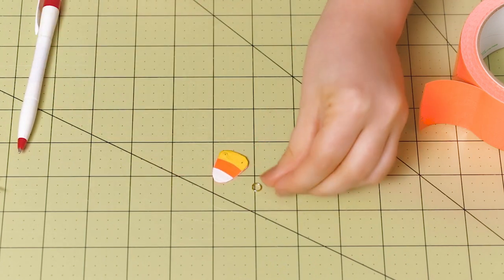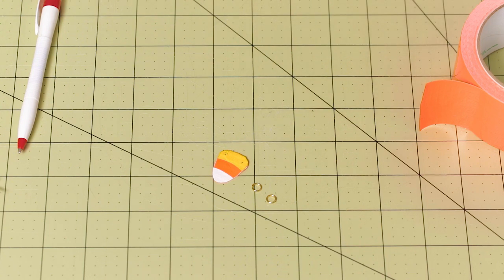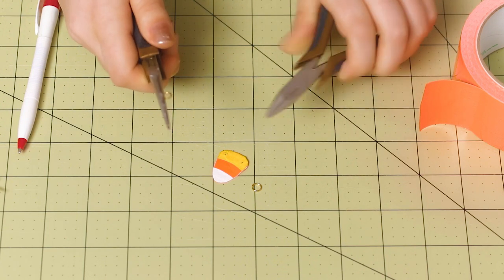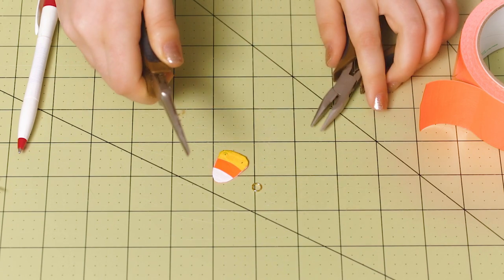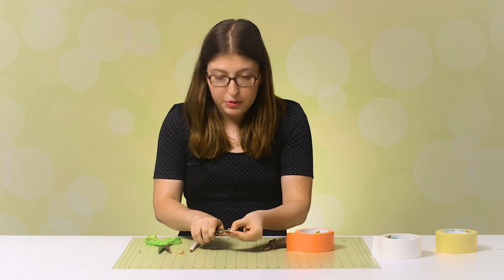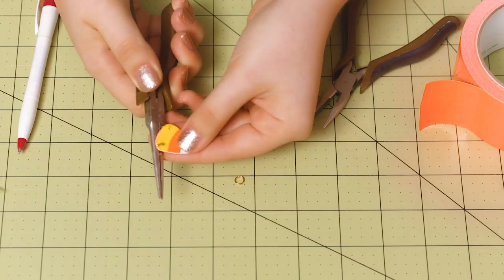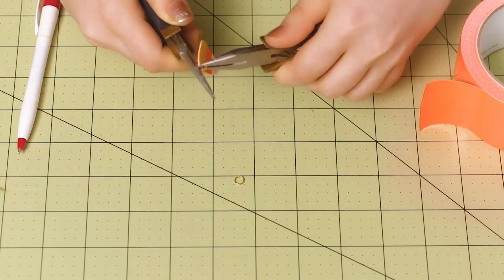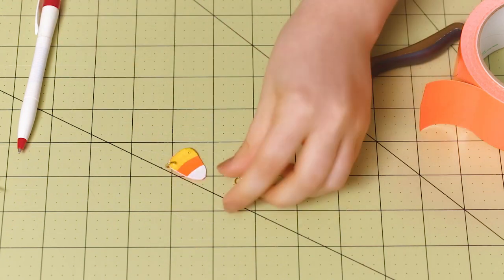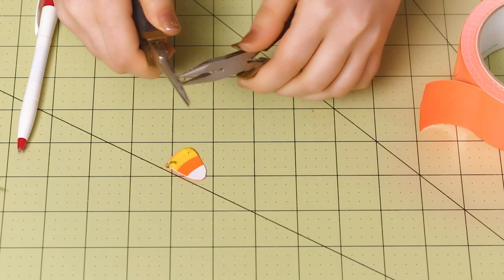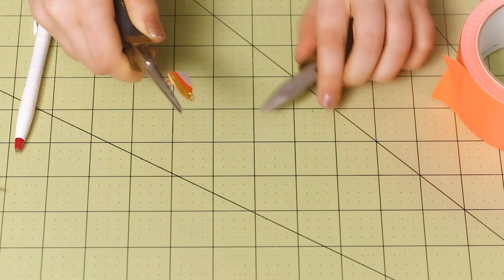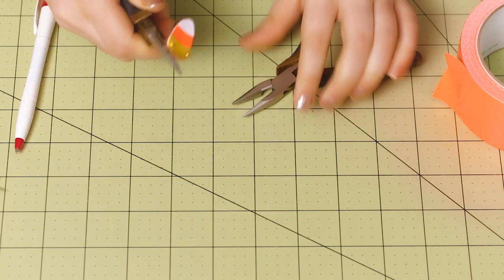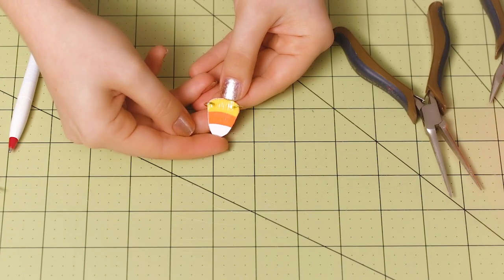At this point, you're going to need two of your large jump rings as well as a pair of jewelry pliers. Hold a jump ring with one pair of pliers and then open it up with the other pair. And then we're just going to thread that through one of the holes that we just made. Once you have that on there, you can close up your jump ring. And then you can repeat that on the other side. And there we go. Now we have our candy corn necklace charm.